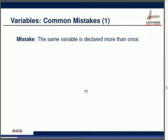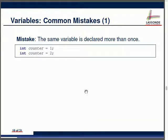Now let's look at common mistakes. Number one: don't declare the same variable more than once — only declare it once in your program. For example, if you have two variables both called 'counter', that's a mistake. There are two ways to fix this: if you really want two separate variables, use different names like counter1 and counter2. If you only want one placeholder, declare it once and then just reassign its value.